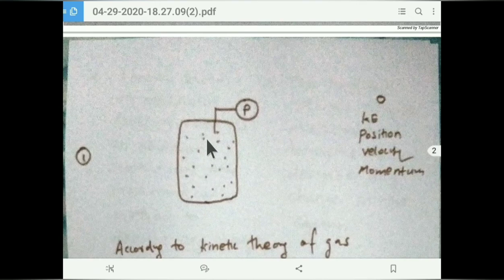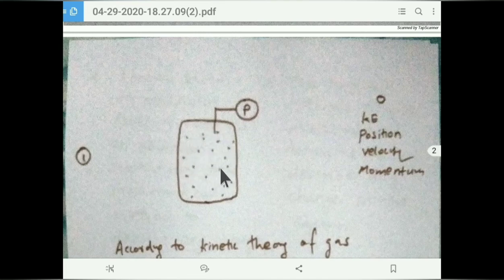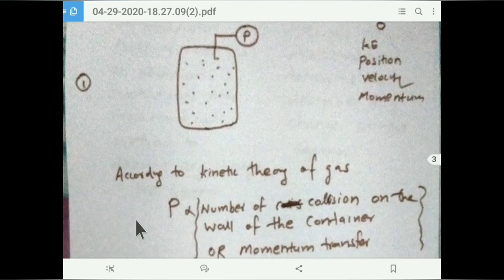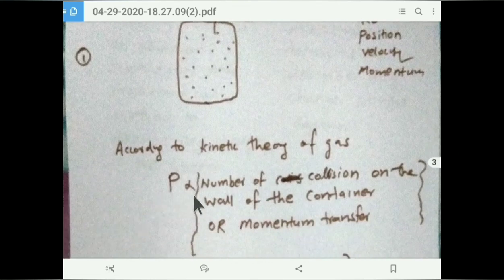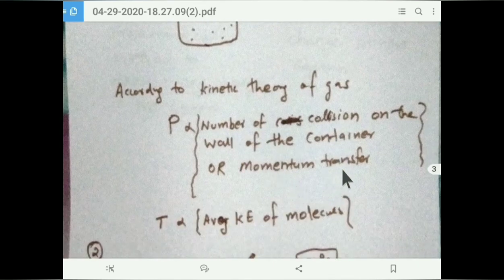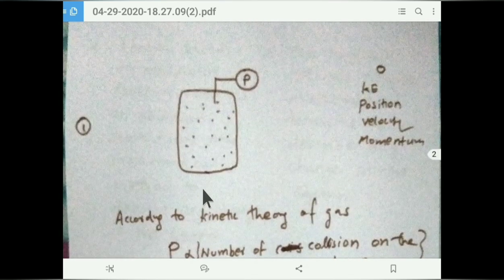Consider gas in a cylinder with a pressure gauge measuring the gas pressure. In the classical approach, the entire cylinder content is a single large entity and the pressure gauge directly measures the pressure. In the statistical approach, according to the kinetic theory of gases, pressure is proportional to the number of collisions on the wall of the container — that is, momentum transfer. Each molecule collides on the wall and transfers momentum.